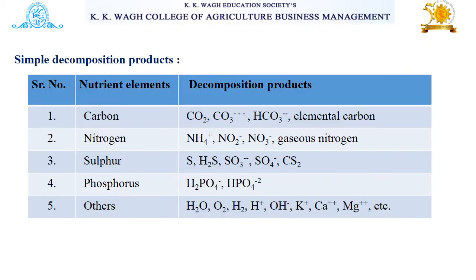Here different simple decomposition products are given with their nutrient elements. Carbon, nitrogen, and sulfur are listed with their decomposition products, such as gaseous nitrogen, CO₂, and elemental carbon.